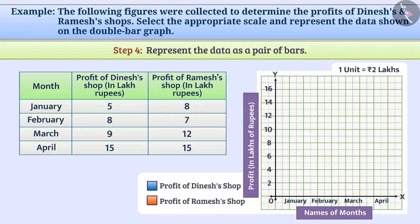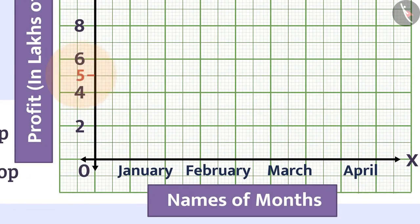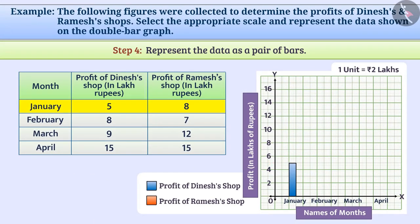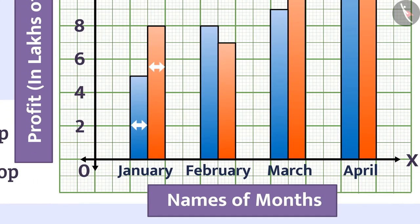Now, we will represent the data as a pair of bars. The profit of Dinesh's shop in the month of January is 5 lakh. Therefore, we will draw a bar up to number 5 on the y-axis. In the same month, the profit of Ramesh's shop is 8 lakh rupees, which we will show by drawing a bar up to number 8 on the y-axis. Similarly, we will represent the data for all months. Remember that the width of the bars is kept the same and the distance between pairs of bars is also kept the same.